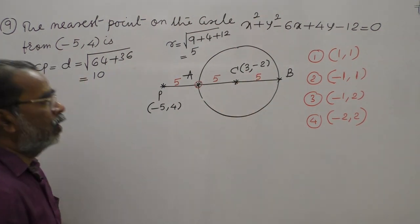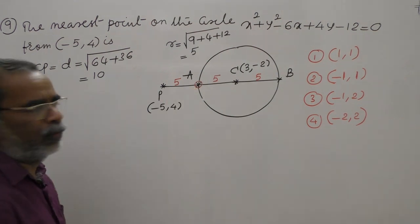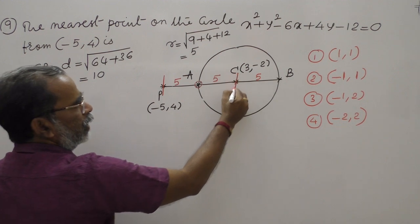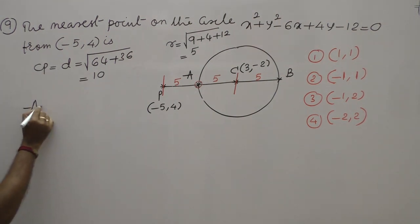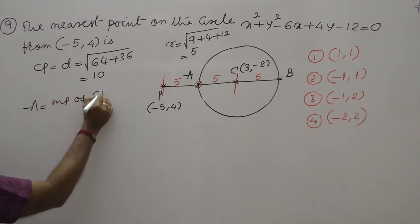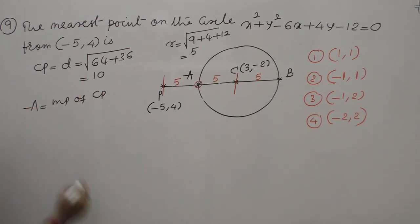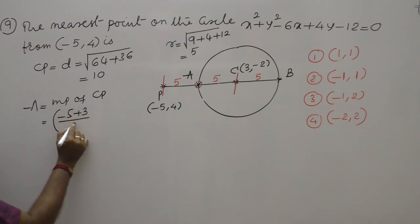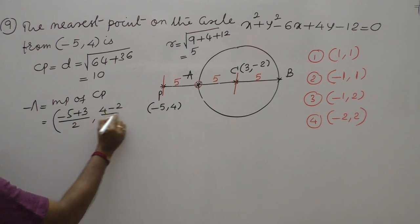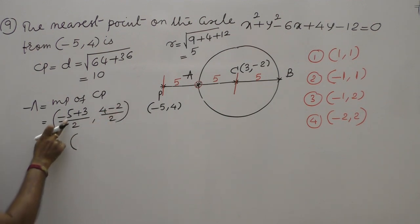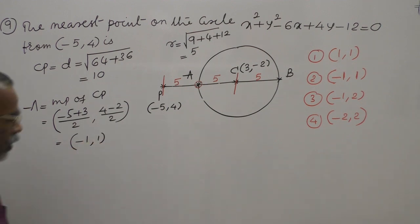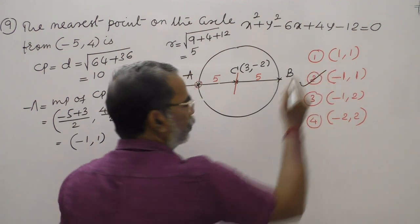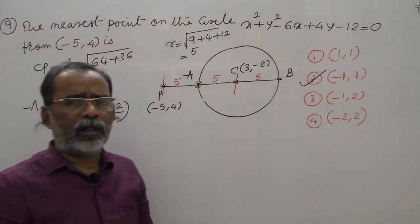Since CA equals AP equals 5, point A is the midpoint of CP. Midpoint: x equals (minus 5 + 3)/2 equals minus 1, y equals (4 + (minus 2))/2 equals 1. So the nearest point is minus 1 comma 1. Second option. In some problems CP and the radius differ; in that case A divides PC in the ratio of the two segments internally.